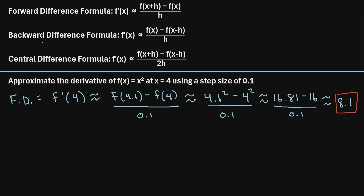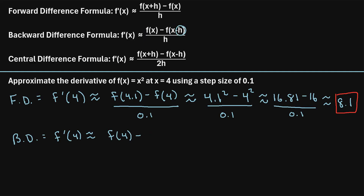Using the forward difference formula, we estimate that the derivative of this function at an x value of 4 is equal to 8.1. Now let's try the backward difference formula. The backward difference formula says f prime of 4 is approximately equal to f of x minus f of x minus h, all divided by h. Our x value is 4, and h is 0.1, so 4 minus 0.1 is 3.9.